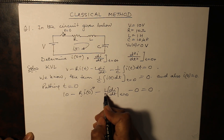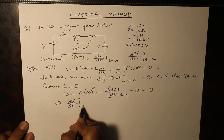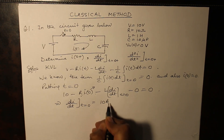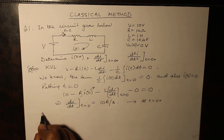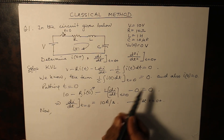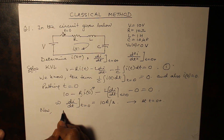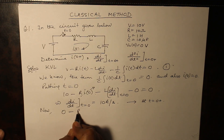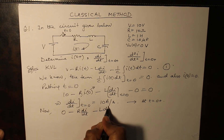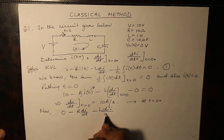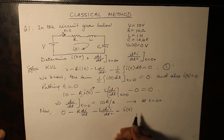Substituting the value of L which is equal to 1 henry, we obtain dI/dt at t=0. Differentiating again and substituting: minus R di/dt minus L d²i/dt² minus i(t) is equal to zero.